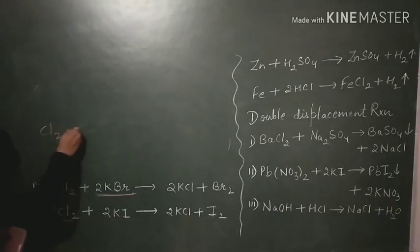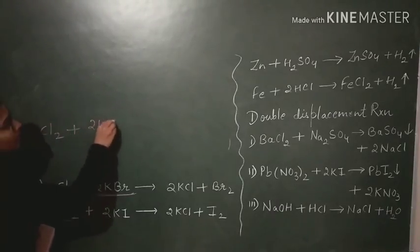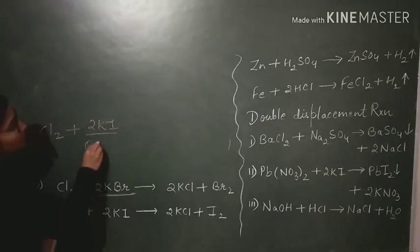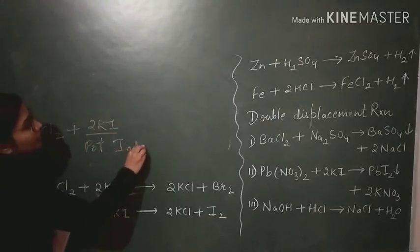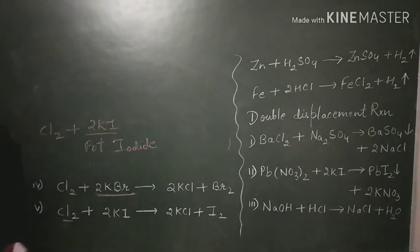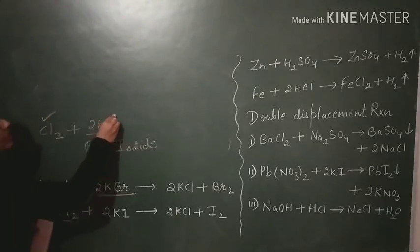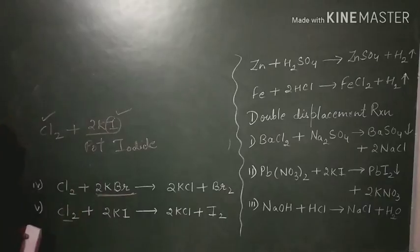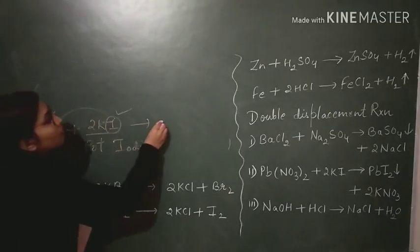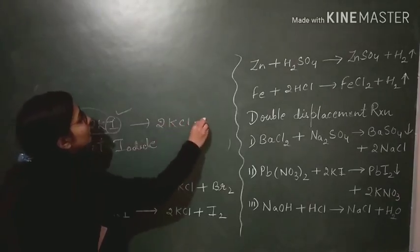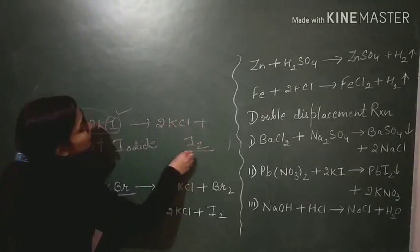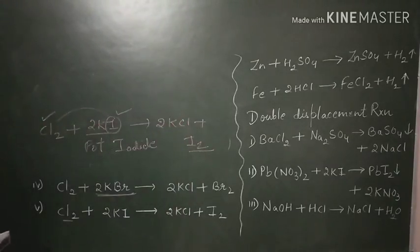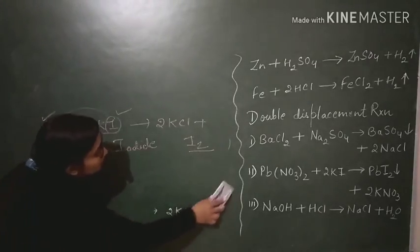Let's take another example. We are taking Cl2 again reacting with 2KI, which is potassium iodide. Chlorine is more reactive than iodine, so we simply exchange them. There will be formation of 2KCl and iodide. These are examples of displacement reaction involving non-metals.